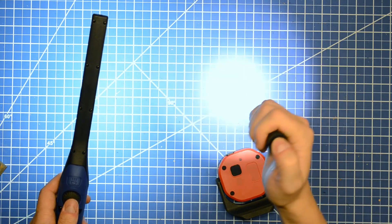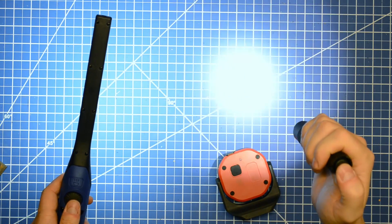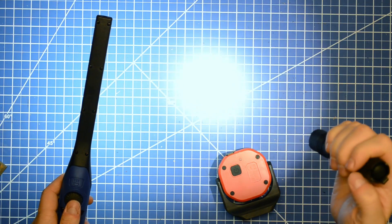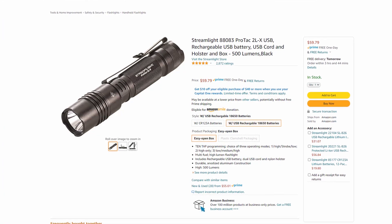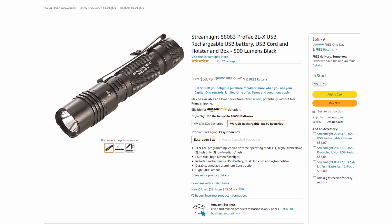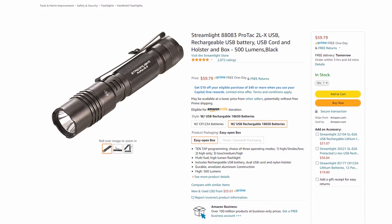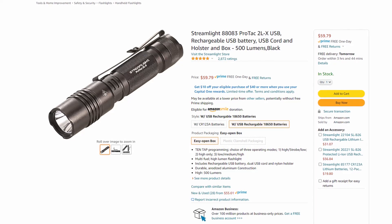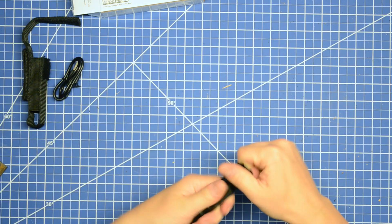Next up is the Streamlight. We went with the 500 lumen ProTac 2LX USB model 88083 because it's extremely highly ranked in the reviews and sales on Amazon. We had to go with a rechargeable 18650 style battery because we didn't want any fluctuation between a CR123 style battery between the lab's testing and our own testing.